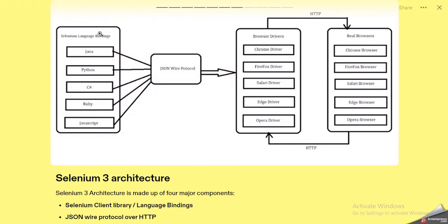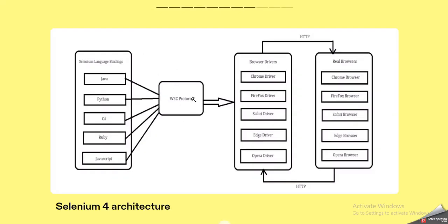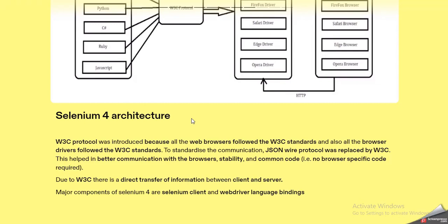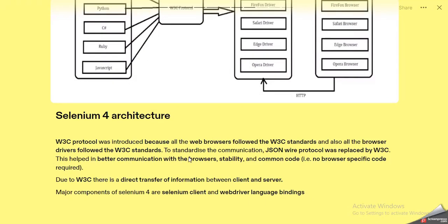In Selenium 3 architecture, the client talks to the server side through the JSON Wire Protocol. In Selenium 4, the JSON Wire Protocol has been removed and the W3C protocol has been introduced, making it more convenient and faster. All web browsers follow W3C standards and browser drivers also follow W3C standards, so now the client side also follows W3C. To standardize communication, JSON Wire Protocol was replaced by W3C, which helped in better communication with browsers, improved stability, and common code — no browser-specific code is required.